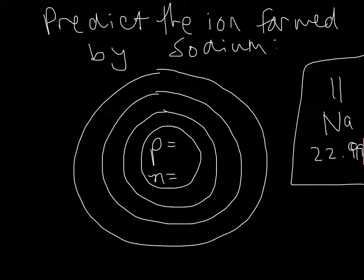I know from reading the periodic table that it's got 11 protons, and I know that because of the atomic number. And I know that if I take the mass number, which is 23, and I subtract 11, I get 12, and that's my number of neutrons.